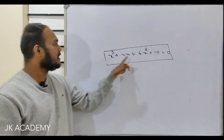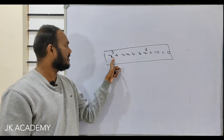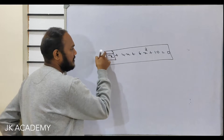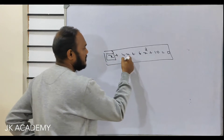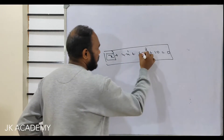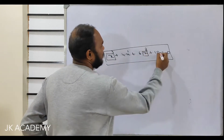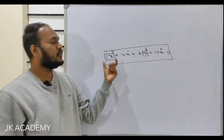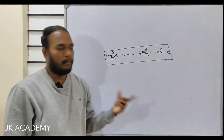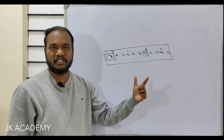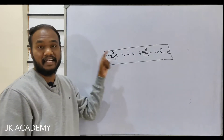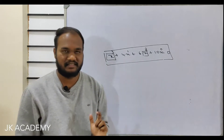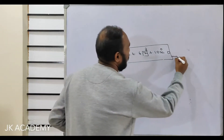In every term, the power is in terms of an integer. If I consider this term, the power is 3. This term, the power is 1. This term, the power is 2. And this term, the power is 0. Zero, one, two, three are integers. Any mathematical expression or equation with integers as powers is called a polynomial. So this is basically a polynomial.